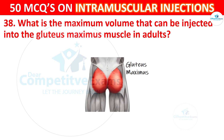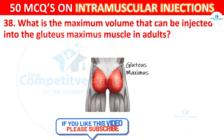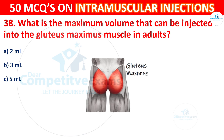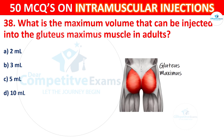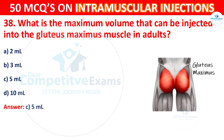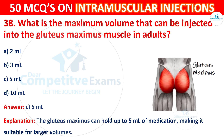Question 38: What is the maximum volume that can be injected into the gluteus maximus muscle in adults? Options are: 2 ml, 3 ml, 5 ml, or 10 ml. The correct answer is C, 5 ml. The gluteus maximus can hold up to 5 ml of medication, making it suitable for larger volumes.